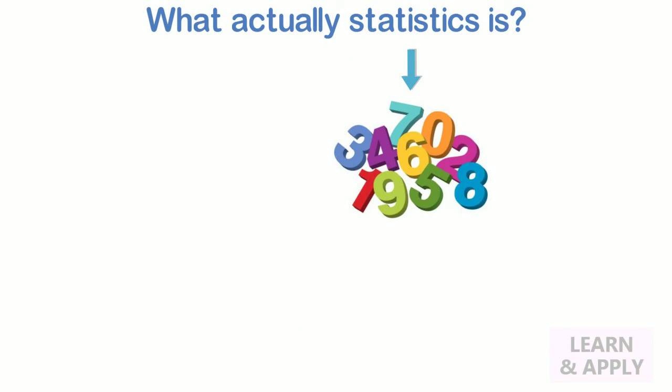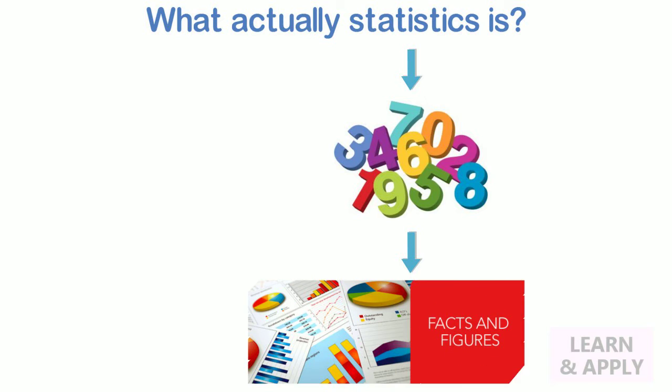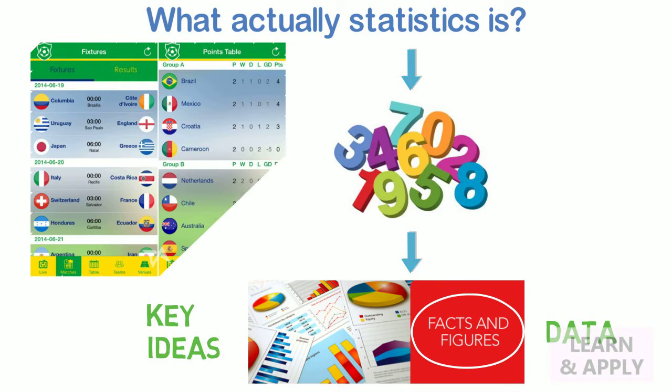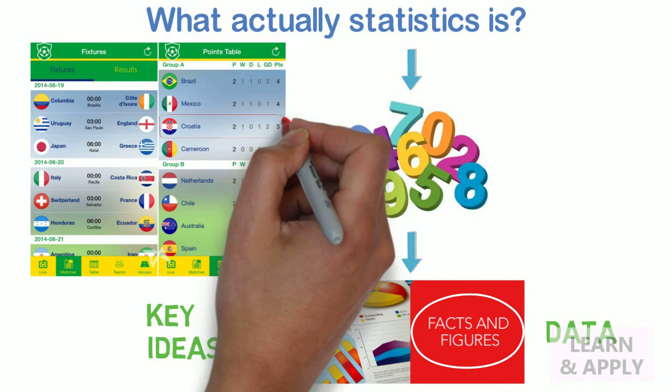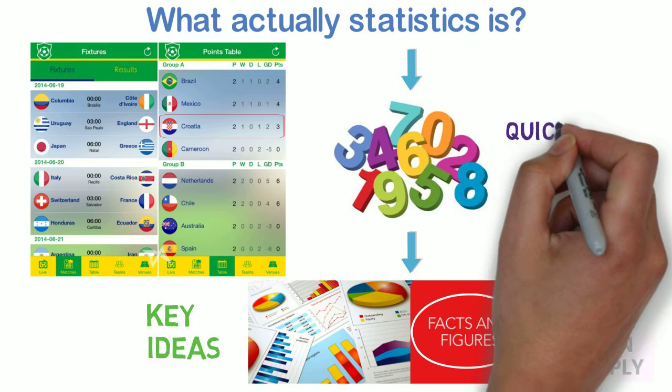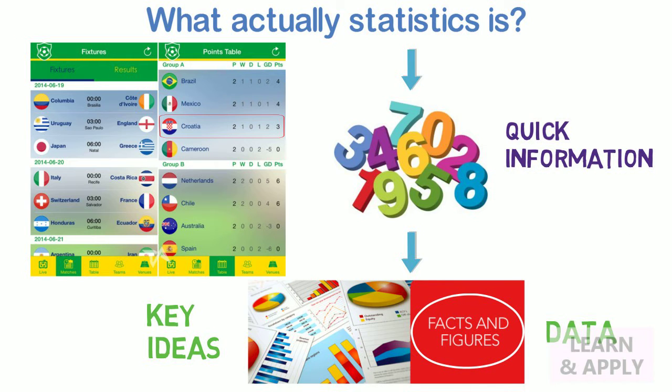Statistics are numbers that summarize raw facts and figures in some meaningful way. They present key ideas that may not be immediately apparent by just looking at the raw data. Here data means facts and figures from which we can draw conclusions. As an example, we don't have to walk through the lots of football scores when all we want to know is the league position of our favorite team. We need a statistic to quickly get the information we need.